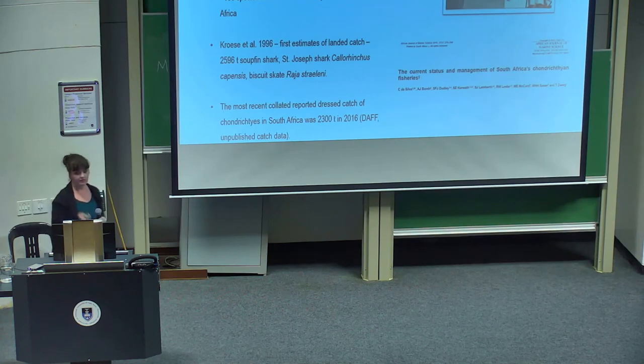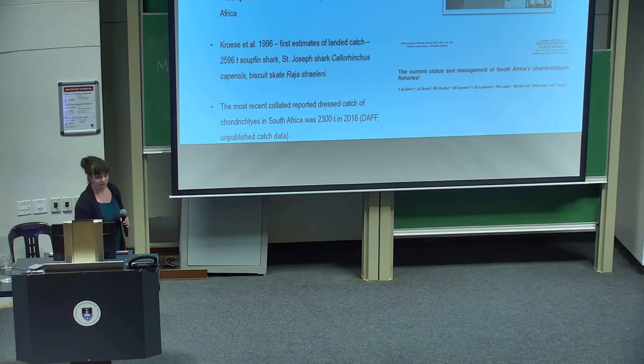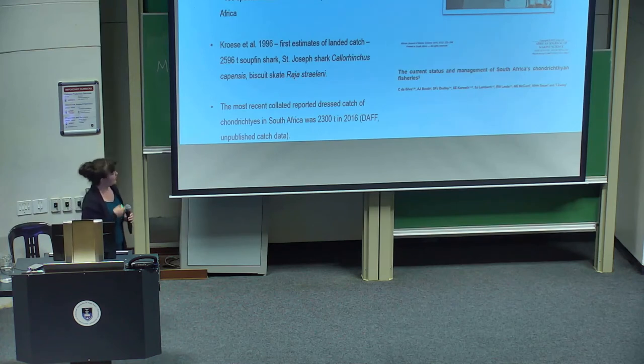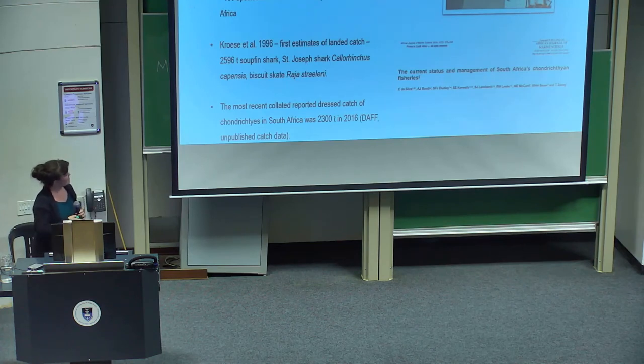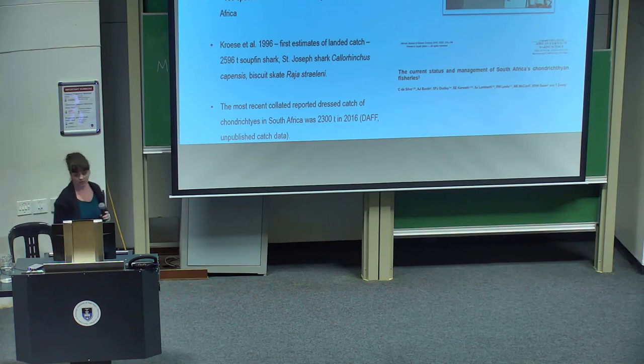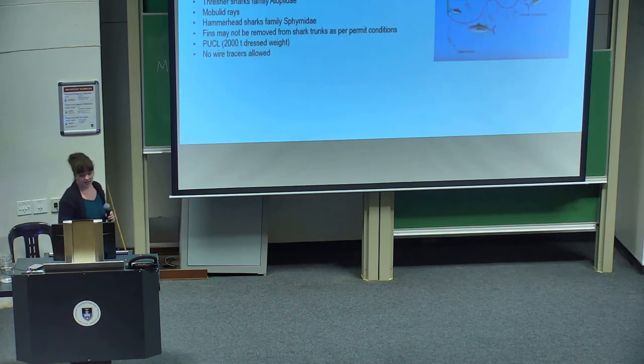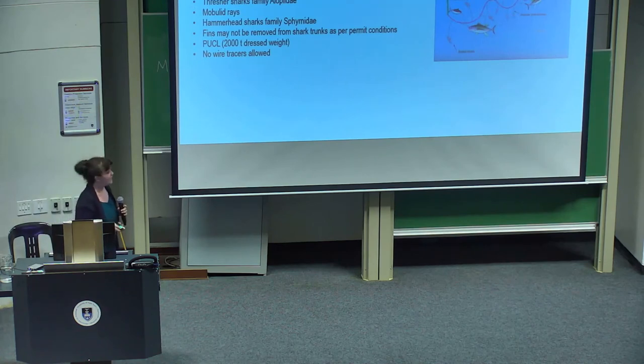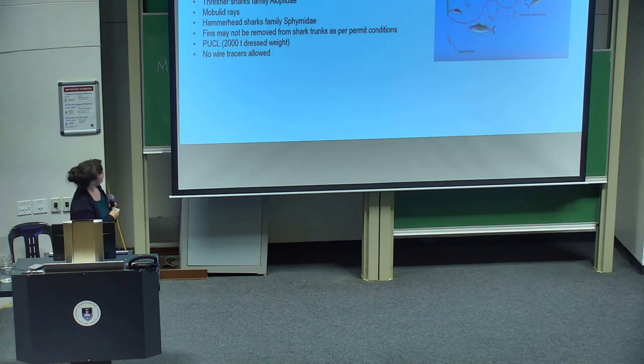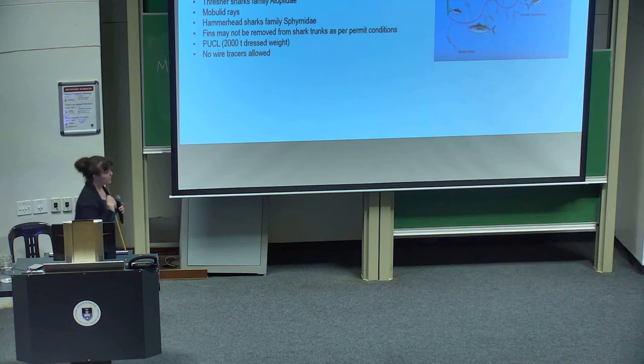It's important to understand the fisheries and how this has changed over time. Chondrichthians, sharks, skates, and rays are caught over 10 to 12 different South African fisheries. It's about 100 species from 204 estimated species occurring in southern Africa. The first overview paper was in 1996 with Kroese, and they estimated 2,500 tons caught over that period. The recent reported catch is kind of similar, but the composition of the catches have changed quite a bit.